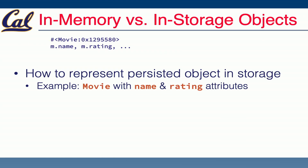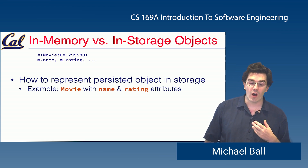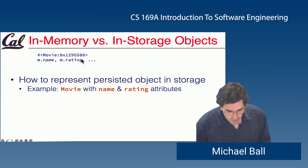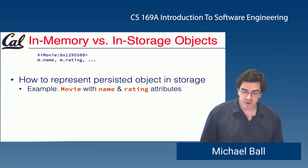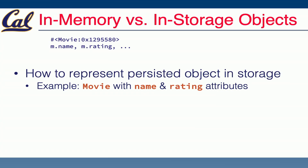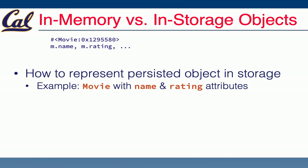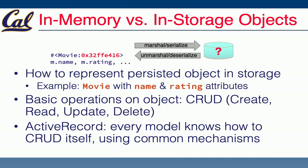One thing we have to be aware of is that when we're working with code in our Rails app, we're working with objects that exist in memory. Like most languages, Ruby provides a default representation of an object. If we have some movie object in memory, how should we work with that object persisted in the database? ActiveRecord's job is to take that object and convert it into a format that can be stored in the database, and similarly to deserialize that object from the database.